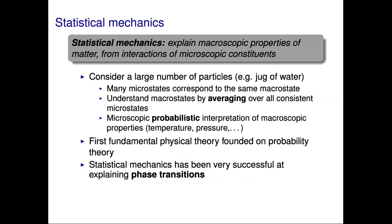But statistical mechanics has proved to be a spectacularly successful theory. In particular, it has been very successful at explaining phase transitions. As an example, consider the abrupt change from water to ice at zero degrees. We're all familiar with this, but why does it happen? Whether the jug is at minus one degree or plus one degree, it still contains the same collection of H₂O molecules. How do these molecules know to collaboratively behave like a solid in one case but like a liquid in the other? Statistical mechanics attempts to answer such questions using probability theory.